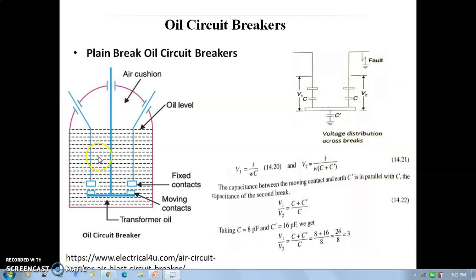Due to arc energy, heat is formed. Whatever oil is there, that is decomposed and produces hydrogen gas. That hydrogen gas surrounds the arc between the two contacts. We have to maintain the space between them and the elongation of the arc. Whatever arc is formed, we have to elongate it so we can reduce the arc.